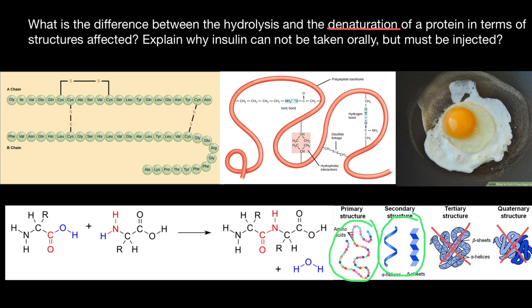Now let's talk about hydrolysis. What's the difference between hydrolysis and denaturation? Here we have one amino acid and another amino acid, and through the process of condensation synthesis one molecule is produced with a peptide bond between these two amino acids. The reverse process is hydrolysis — the whole polypeptide chain is broken down. Two amino acids are produced and one molecule of water is used in this process.